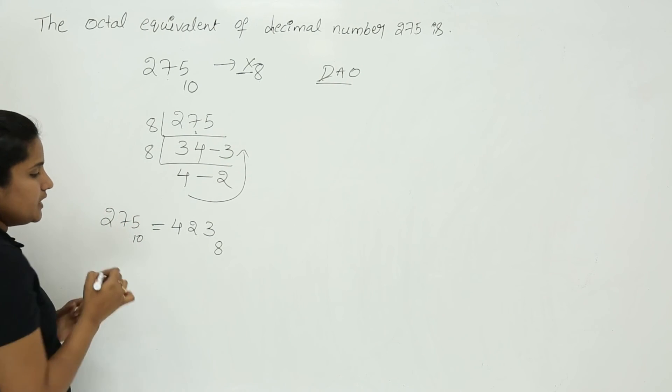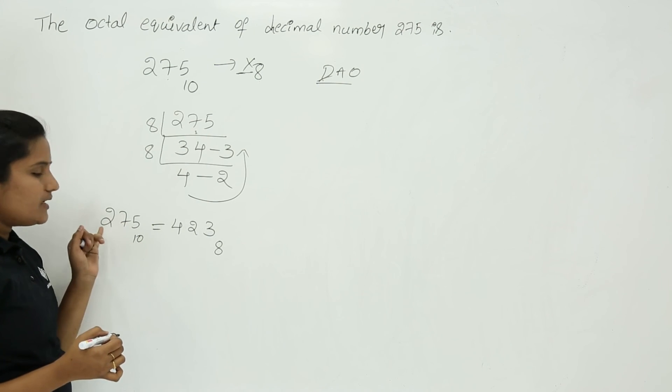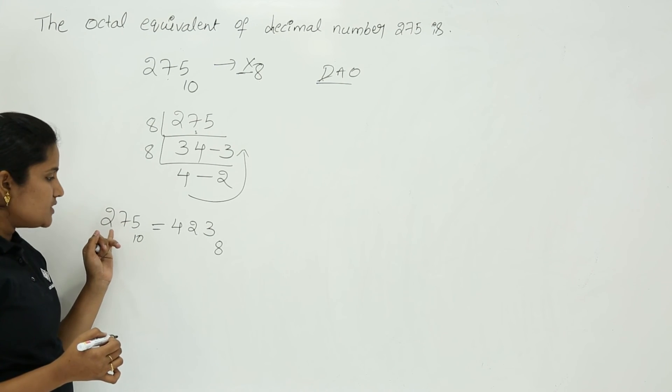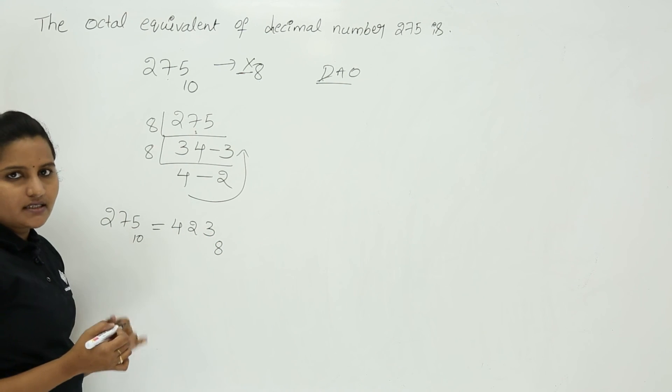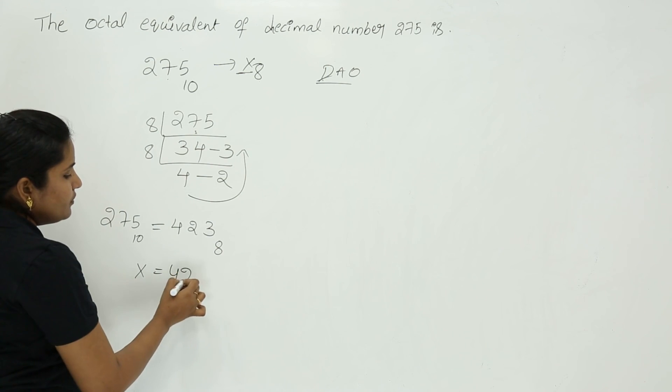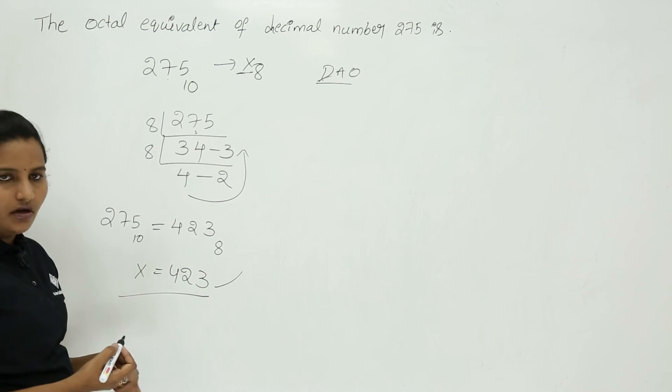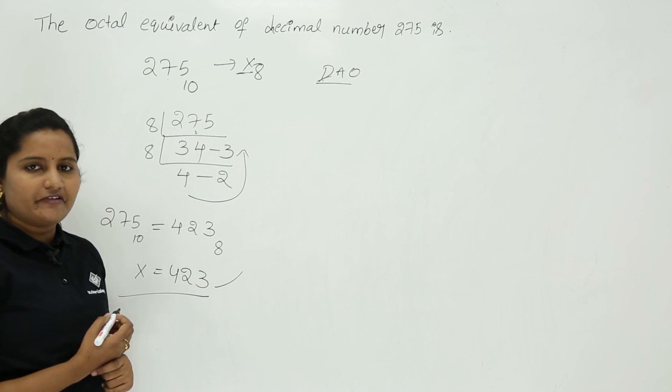275 decimal. So this is the equivalent octal for the decimal number given. That is, for 275 decimal, 4 2 3 octal is the equivalent. Means x is equal to 4 2 3. You can select 4 2 3 octal or 4 2 3 in the given options.